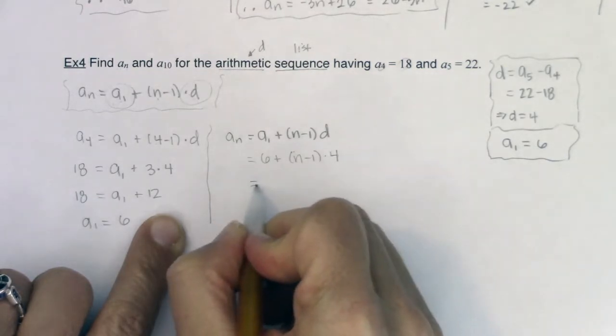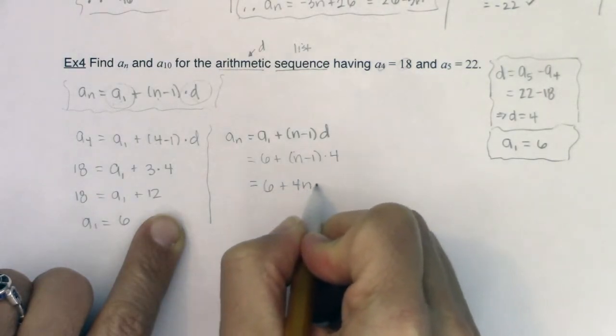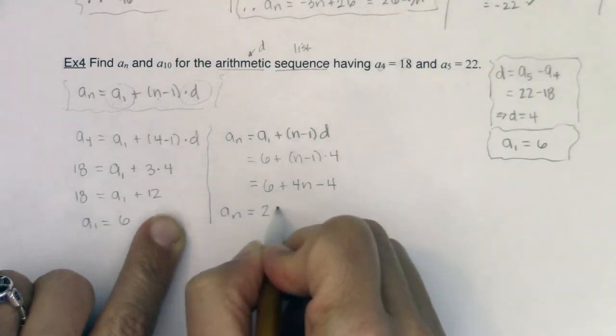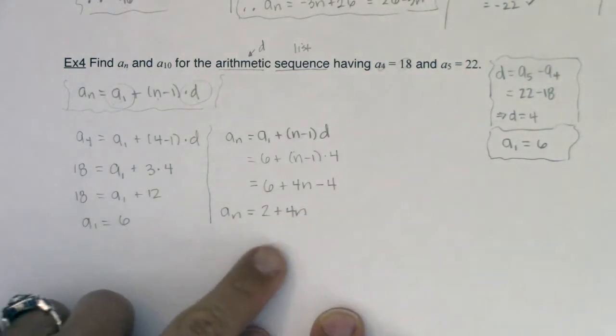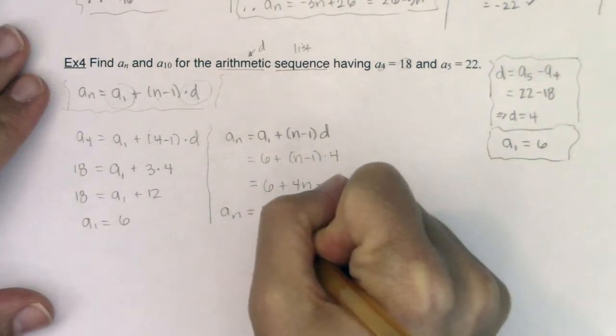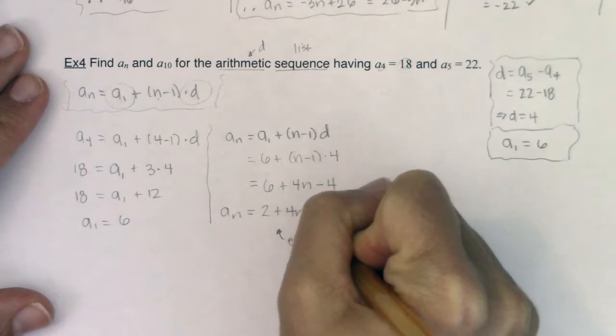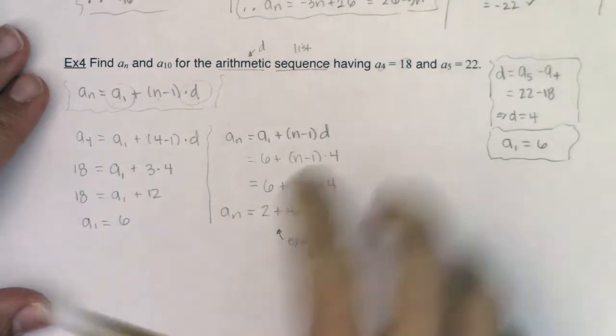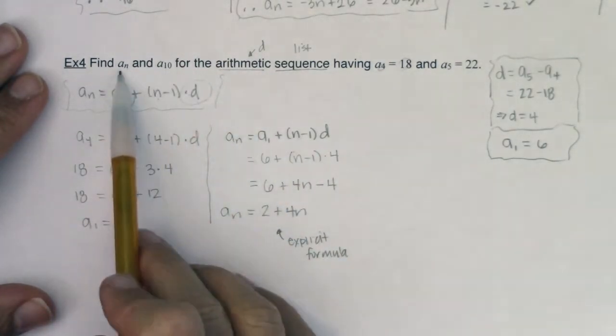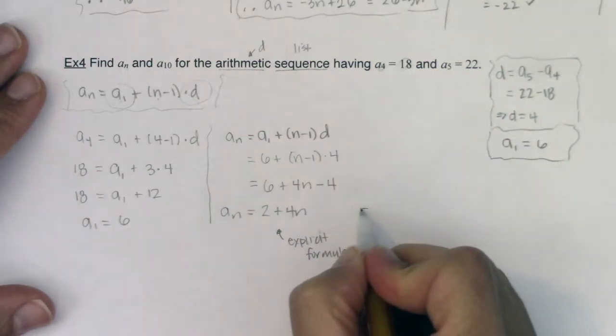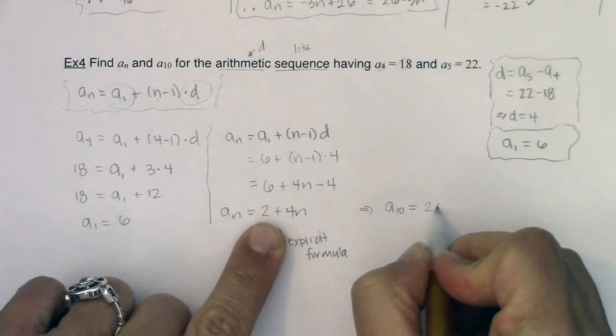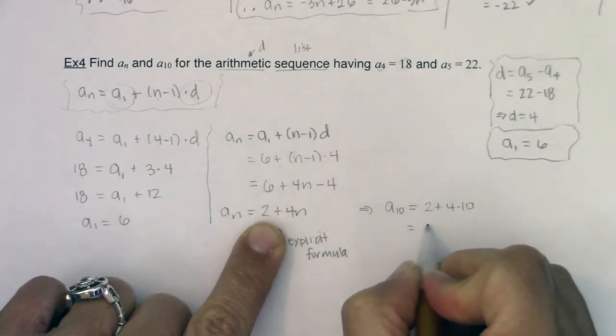So let me simplify this a little bit. This would be 6 plus 4n minus 4. So if I clean this up a little bit, I'm looking at 2 plus 4n. Or you could have written it as 4n plus 2. But I want to just be clear, this is the explicit formula. Which is great because now we can find any a_n value for any n value. So let's figure this out. We found a_n. Now I want a_10. So if I go here a_10 should equal 2 plus 4 times 10. So that would equal 42.